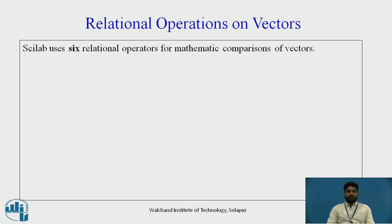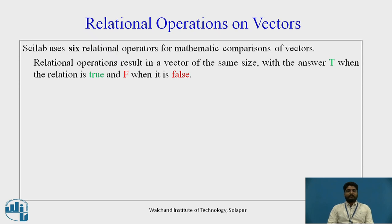Relational Operations on Vectors: Scilab uses 6 relational operators for mathematical comparisons of vectors. Relational operations result in a vector of the same size, with the answer T when the relation is true and F when the relation is false.